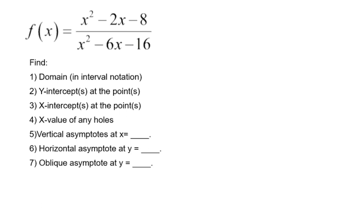the horizontal asymptote, or oblique asymptote of the given rational function. The given rational function f of x is equal to two polynomials, one on top of another. The polynomial in the top is quadratic x squared minus 2x minus 8, and the polynomial in the denominator is also quadratic x squared minus 6x minus 16.